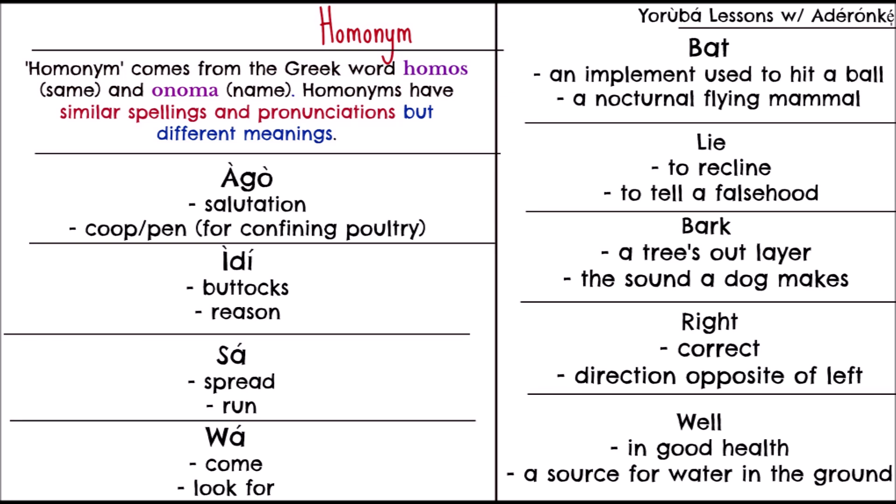For those who listen to Cuban Orisha songs as frequently as I do, especially chants for Elegbara, you might hear a lot of 'Ago ile Ago.' Ago could also mean coop or pen for confining poultry. So the same word means two different things — same spelling, same pronunciation, but different meanings.